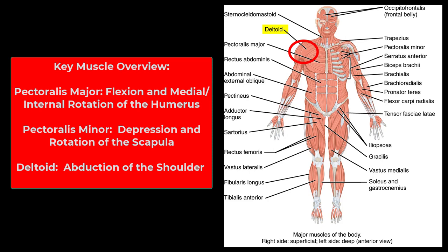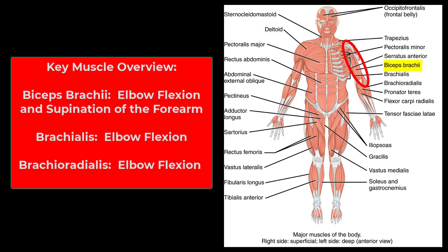Next we have the deltoid — a triangular muscle on the shoulder; its job is abduction of the shoulder. Then the biceps brachii: biceps tells you it has two heads, brachii tells you it's in the brachial region. Its primary function is flexion of the elbow, but don't forget it is also a supinator.